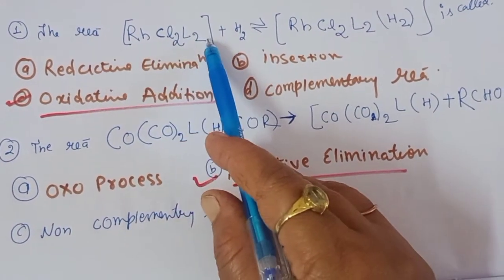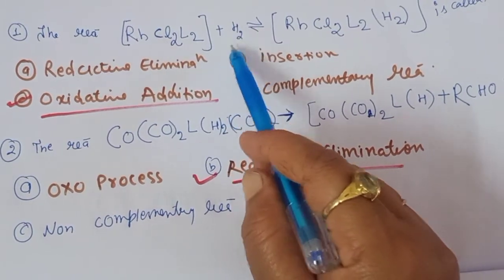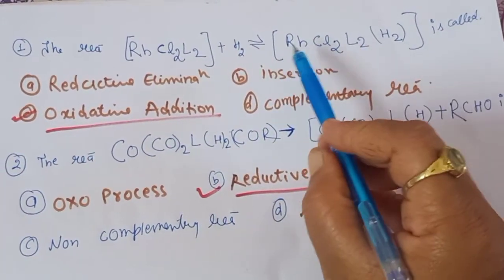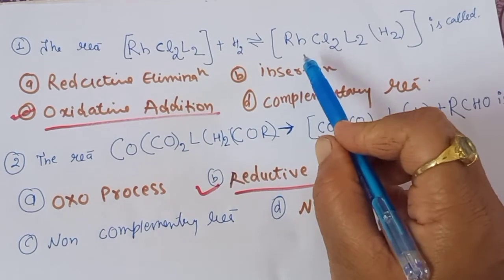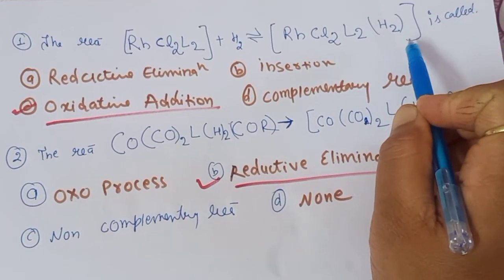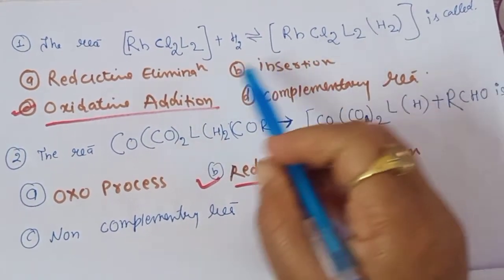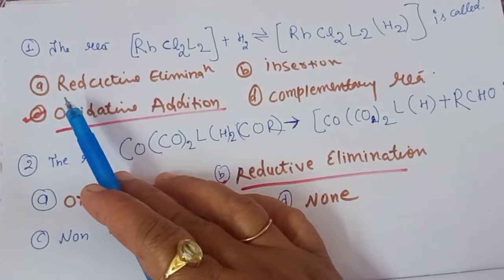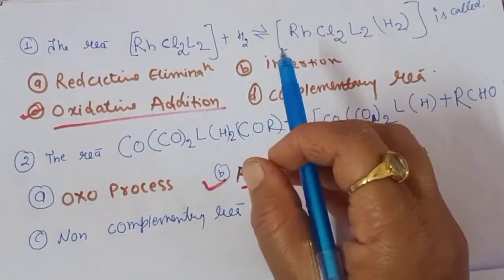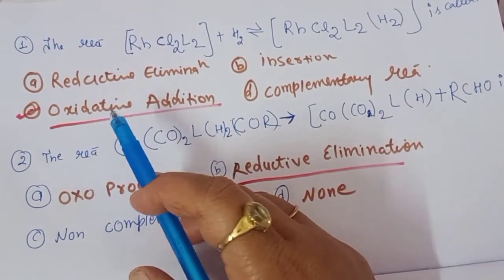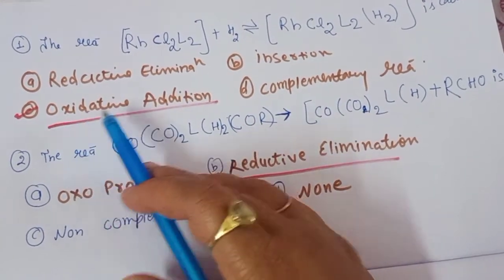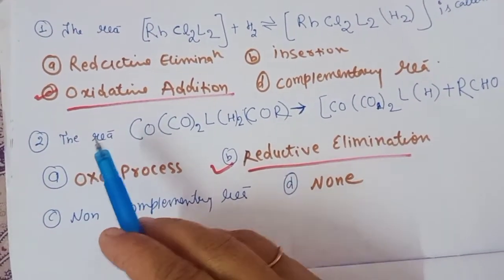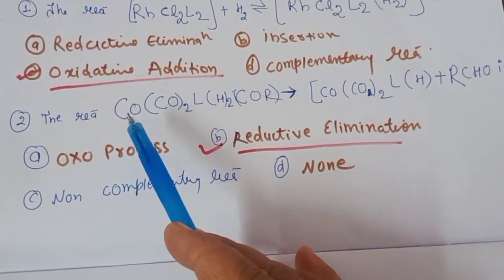Now let's look at some objective questions. The reaction between RhCl2L2 and H2 giving RhCl2L2H2 — which type of reaction is this? Since this involves addition, it is an oxidative addition type. The correct option is C.